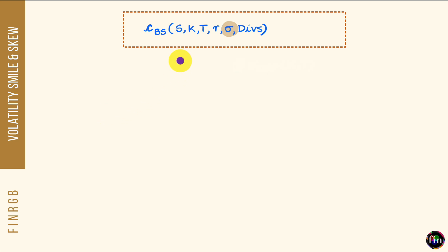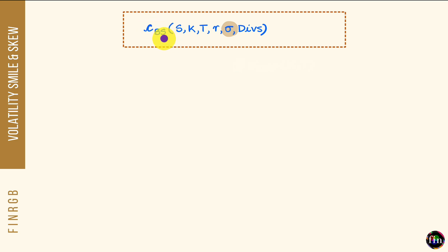Let us start by quickly recapping the concept of implied volatility. What we have here is the very simple, very popular Black-Scholes model, specifically for the case where we are trying to value a European call.